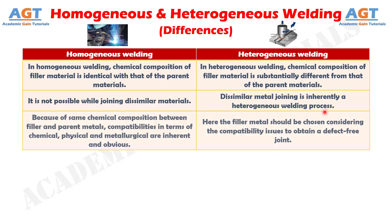Difference number 3: In homogeneous welding, because of the same chemical composition between filler and parent metals, compatibility in terms of chemical, physical, and metallurgical properties is inherent and obvious, whereas in heterogeneous welding, the filler metal should be chosen carefully considering compatibility issues to obtain a defect-free joint.